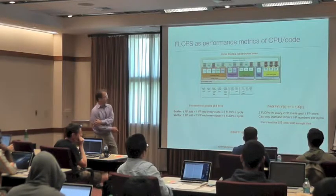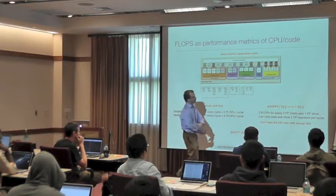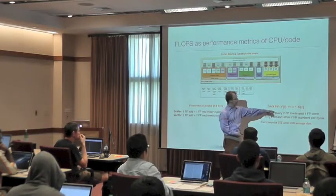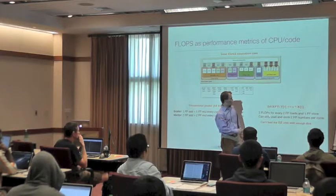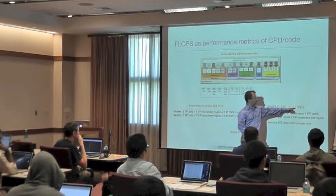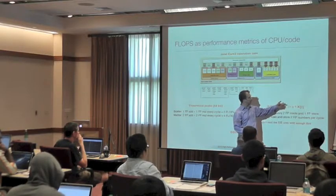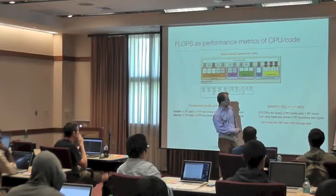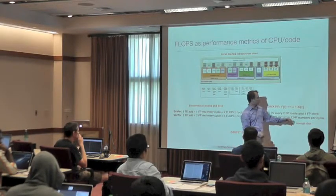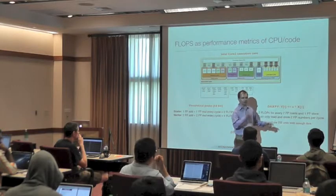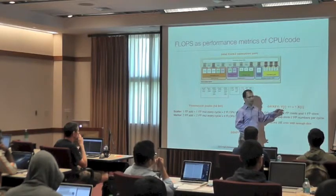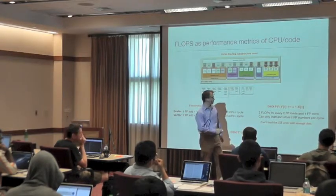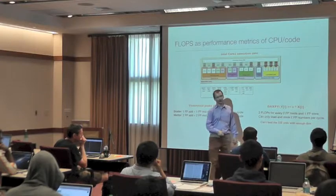Notice that every iteration of this vector loop — think of a sum over i, where i runs over the length of the vector — in order to perform a multiplication and addition, every iteration of the loop you can do two floating point operations. But you need to load two numbers into the registers: X and Y. A can be held in a register permanently, so it doesn't need to be loaded. So you have two floating point loads and one floating point store.